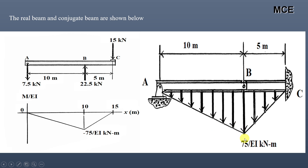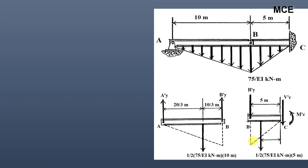After loading the conjugate beam with the M/EI diagram, find the support reactions, then find the shear and moment at the corresponding point to get the slope and displacement. Here we need the shear and moment at point C to get the slope and displacement at point C in the real beam. We divide the conjugate beam into two parts: part A to B and part B to C.